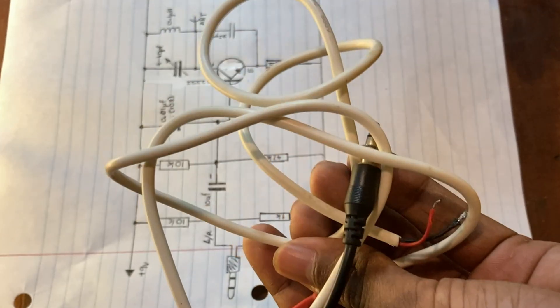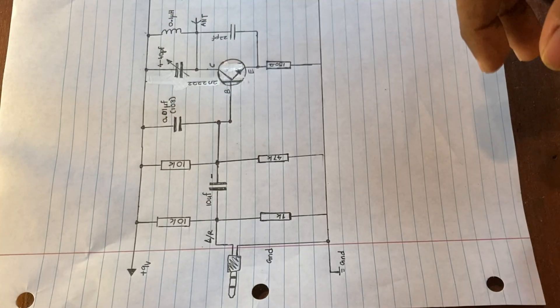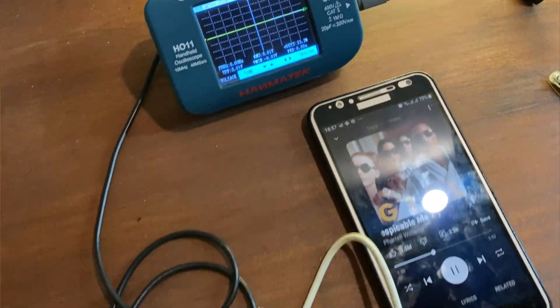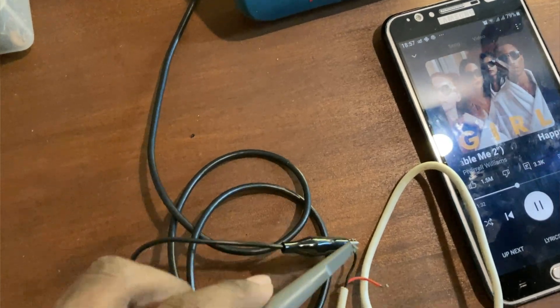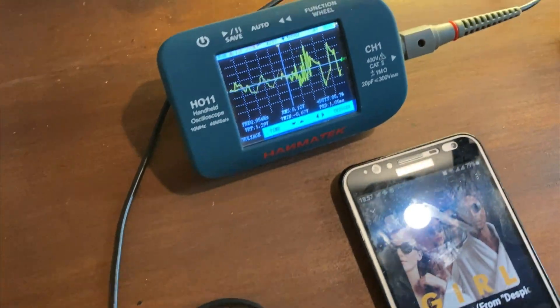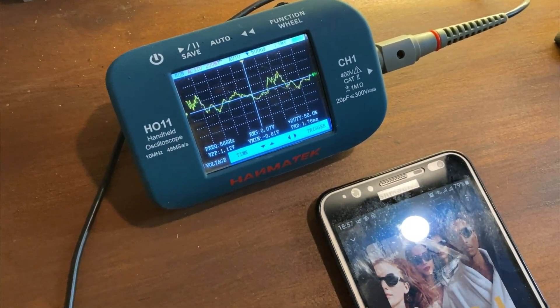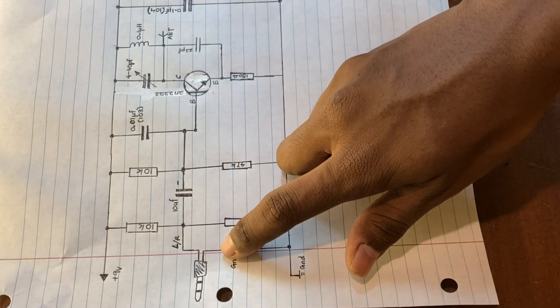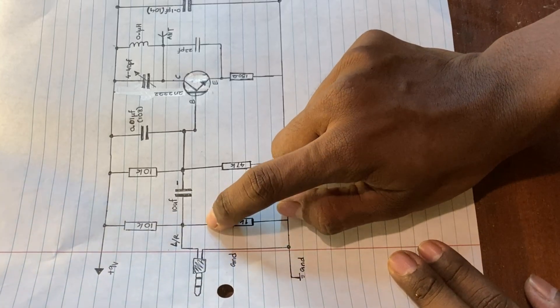So also you will need this audio jack. The audio jack will take the audio signal from the mobile phone and it will feed the audio signal into the circuit. The generated audio signal from the phone comes to here.